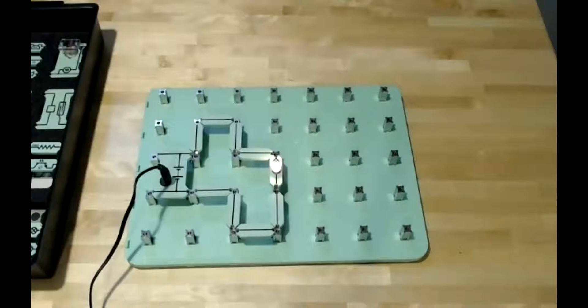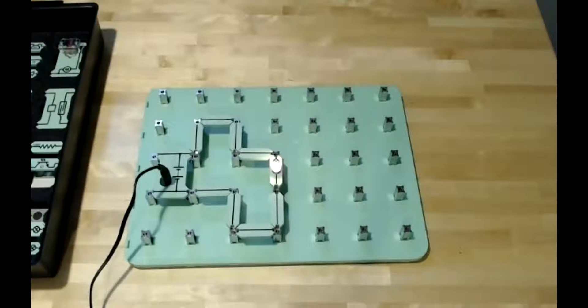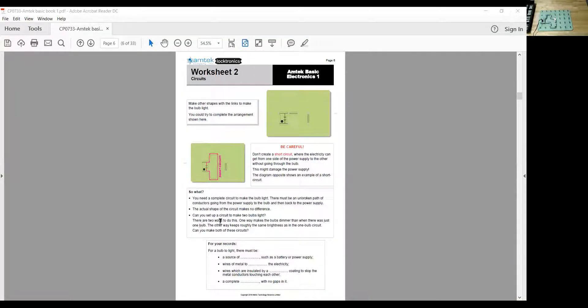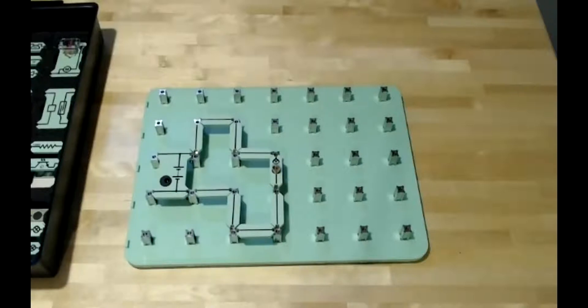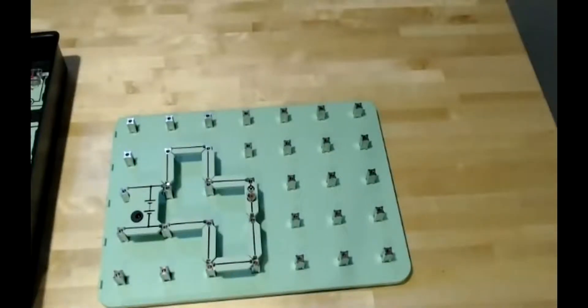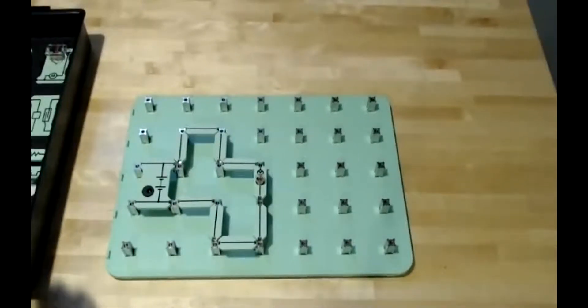Next up, it's going to ask in this worksheet to create a circuit to make two light bulbs light. In the worksheet it says there are two ways to do this. Let me hop over there real quick so you can see that. Okay, so there are two ways to do this. One makes bulbs dimmer than if there was just one bulb. The other way keeps them about the same brightness. So can we make both of these circuits now? Some of you out there that are familiar with electronics will know this is basically introducing the concept of a parallel and a series circuit. So I am going to make two light bulbs here.